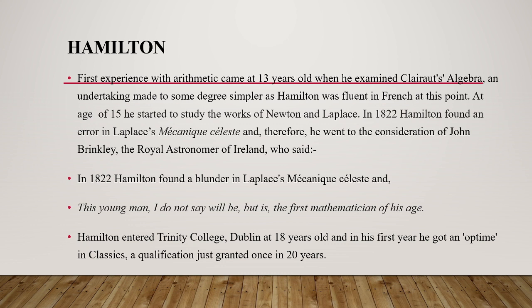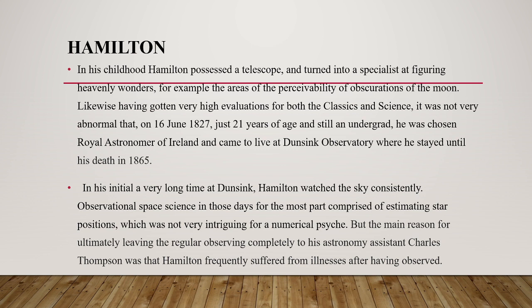Brinkley said of Hamilton: "This young man — I do not say will be, but he is — the first mathematician of his age." Hamilton entered Trinity College Dublin at 18 and in his first year received an optim in classics, a qualification granted only once in 20 years. In his childhood he possessed a telescope and became skilled at calculating celestial phenomena such as the areas and visibility of lunar eclipses.